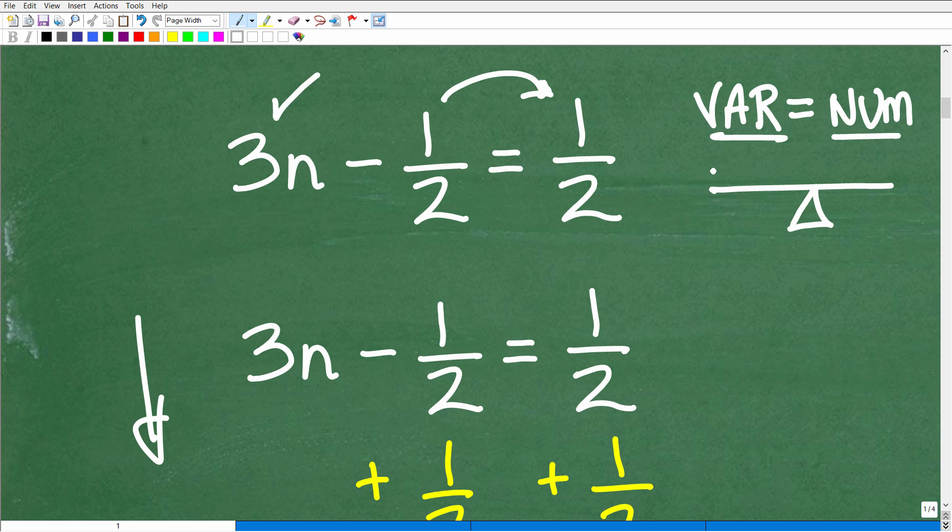You can do anything you want for the most part to an equation as long as you do it equally to both sides. In other words, if you want to add a number to the left-hand side of the equation, no problem. Just make sure you add that exact same number on the other side, okay?